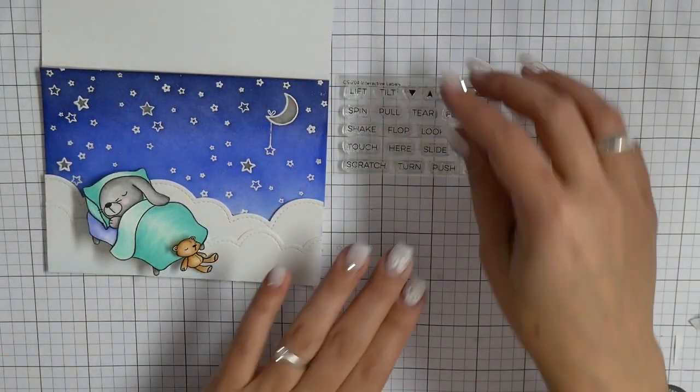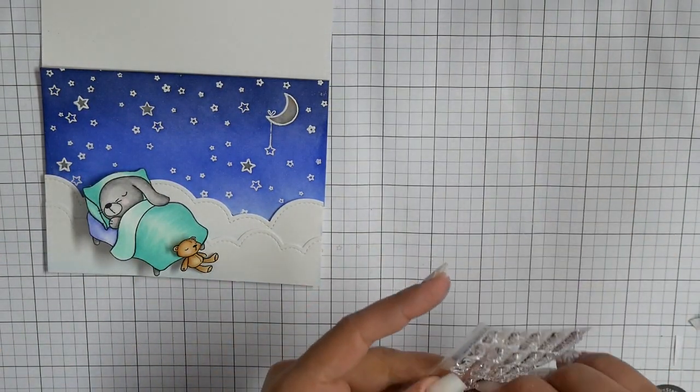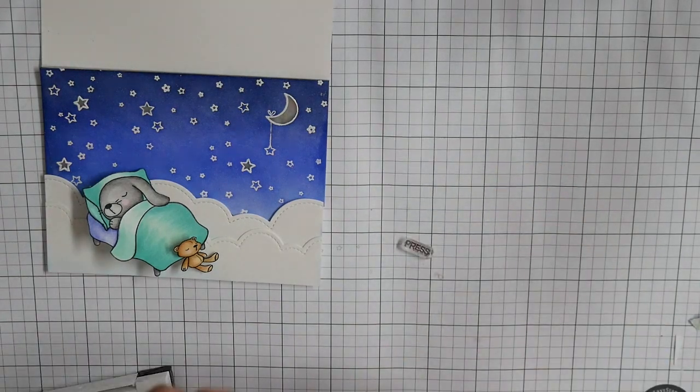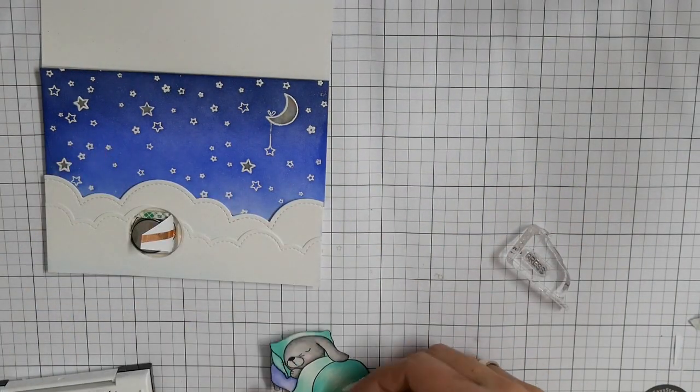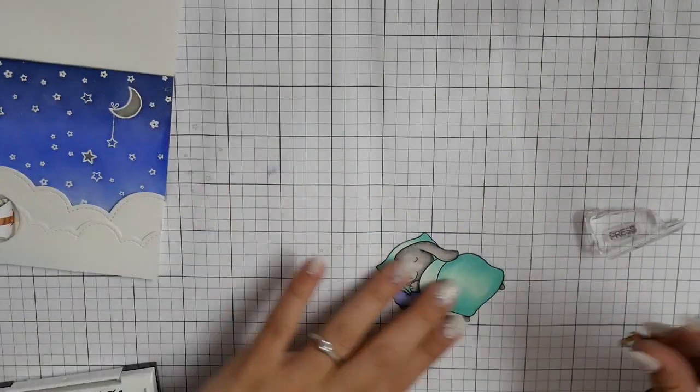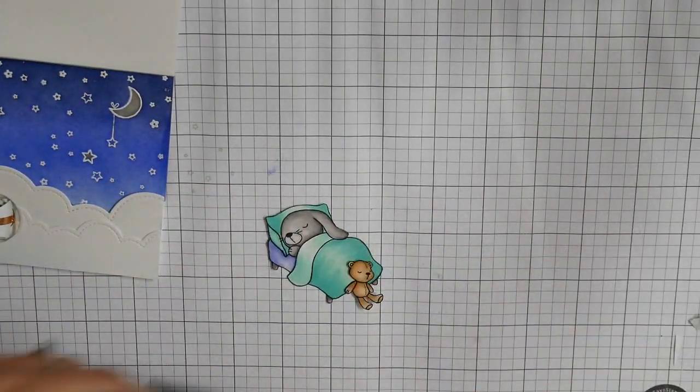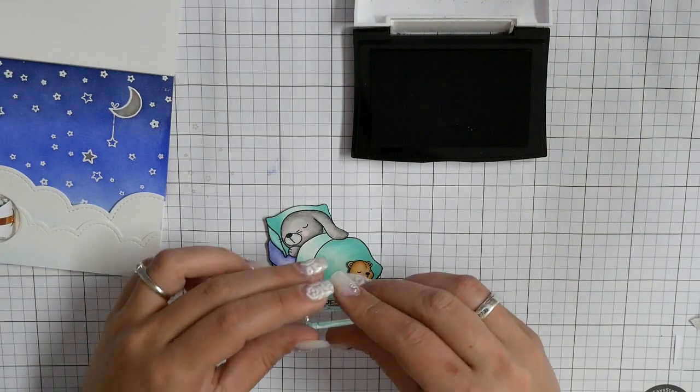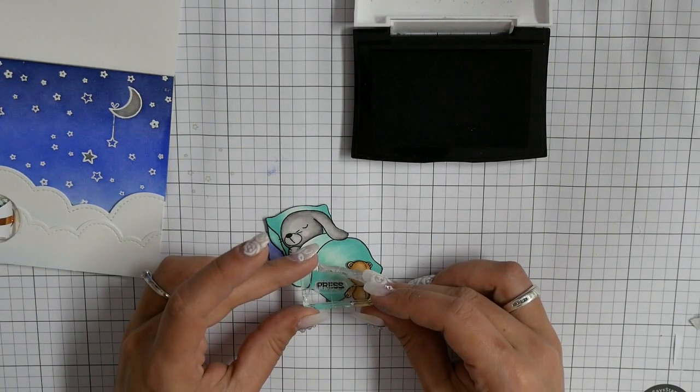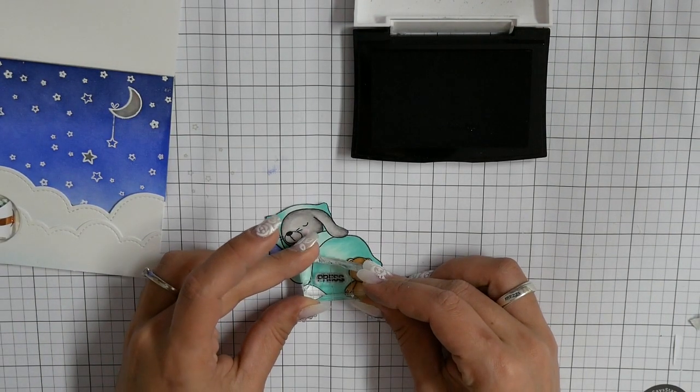So I put my anti-static powder bag on top of the glue, and now it isn't sticky anymore. I can easily stamp my sentiment on the image. I'm using here VersaFine ink pad because this one is really black ink.